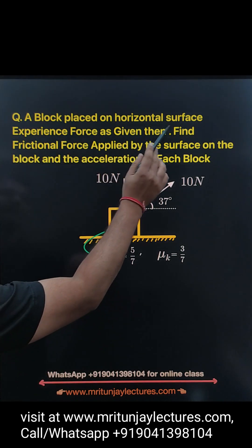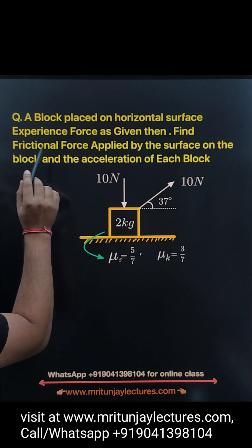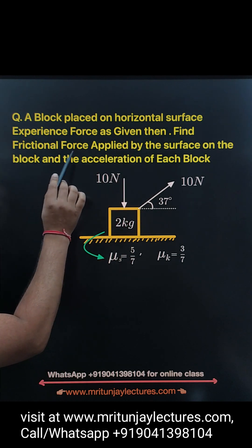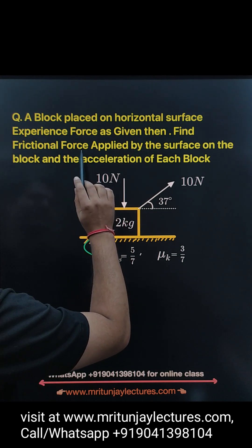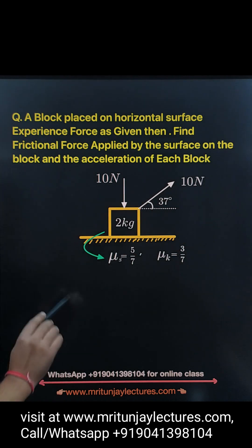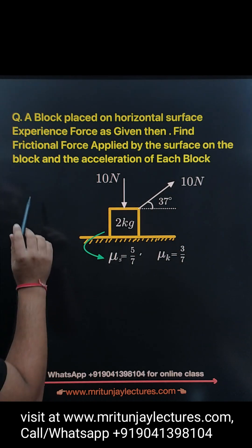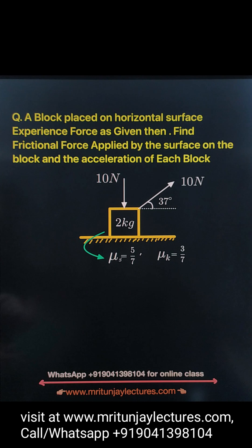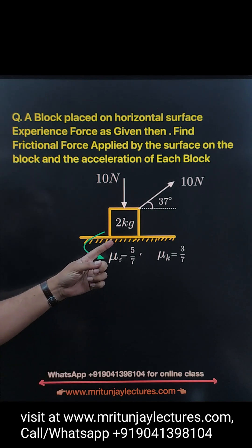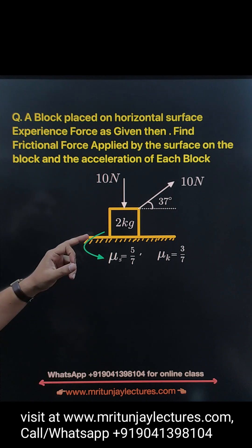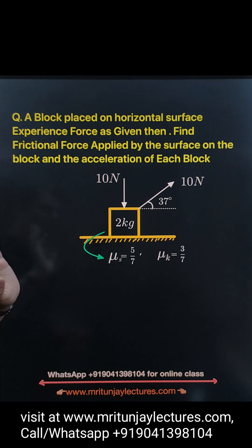A block on a horizontal surface experiences forces as given. Find the frictional force applied by the surface on the block, and the acceleration of the block. Our goal is to determine the acceleration of the block and the frictional force applied by the surface on the block.